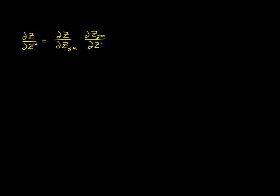We can say that this is the partial derivative of z with respect to our covariant metric tensor z_jm, and to complete the chain rule it's the partial of z_jm with respect to zⁱ. This chain rule looks a little different than we've seen it before — normally it's just done with respect to a variable with a single index — but this works too. The difference here is that this is a double contraction, so there will be nine terms in this contraction.